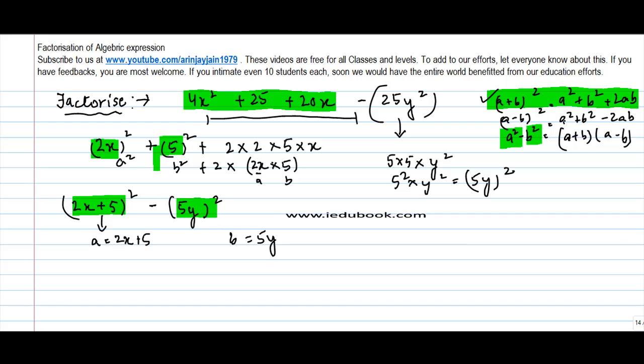So if that be the factor, then I can use these two as the identity. So I can write this as 2x plus 5 plus 5y into 2x plus 5 minus 5y. So by doing this I was able to simplify this expression and find out its irreducible factors.